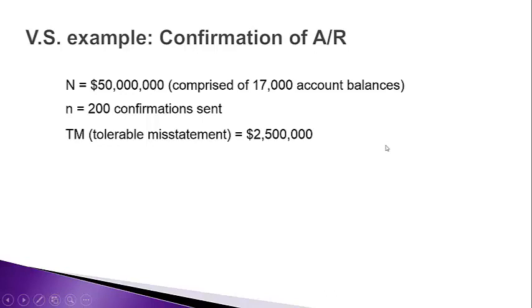Also assume that prior to sending out the confirmations, we decided that the tolerable misstatement was $2.5 million. Tolerable misstatement is the materiality threshold associated with variable sampling — it's how much misstatement we can have within the account before we say the account is misstated. In this example, we're assuming the account of $50 million can be misstated by plus or minus $2.5 million.